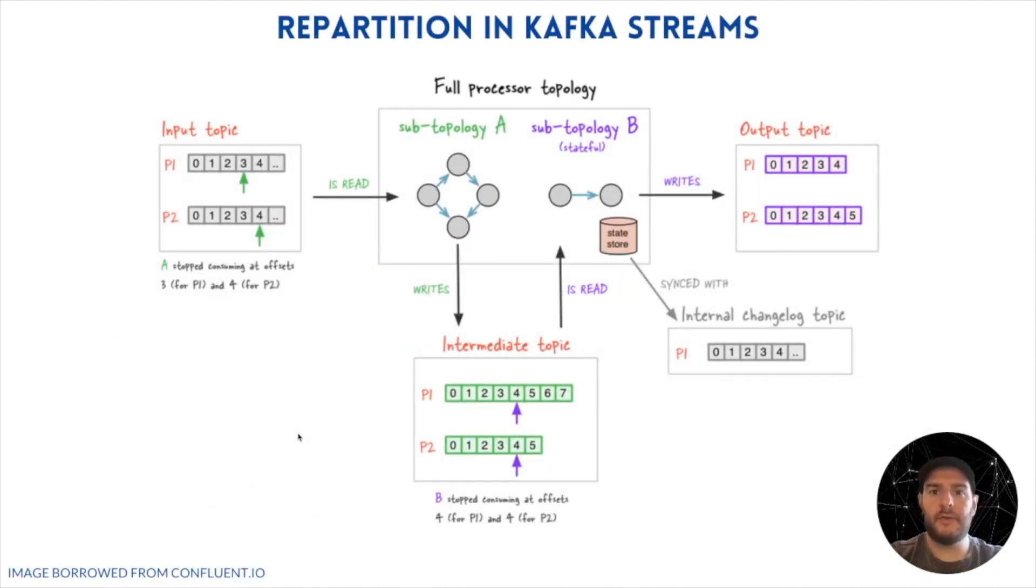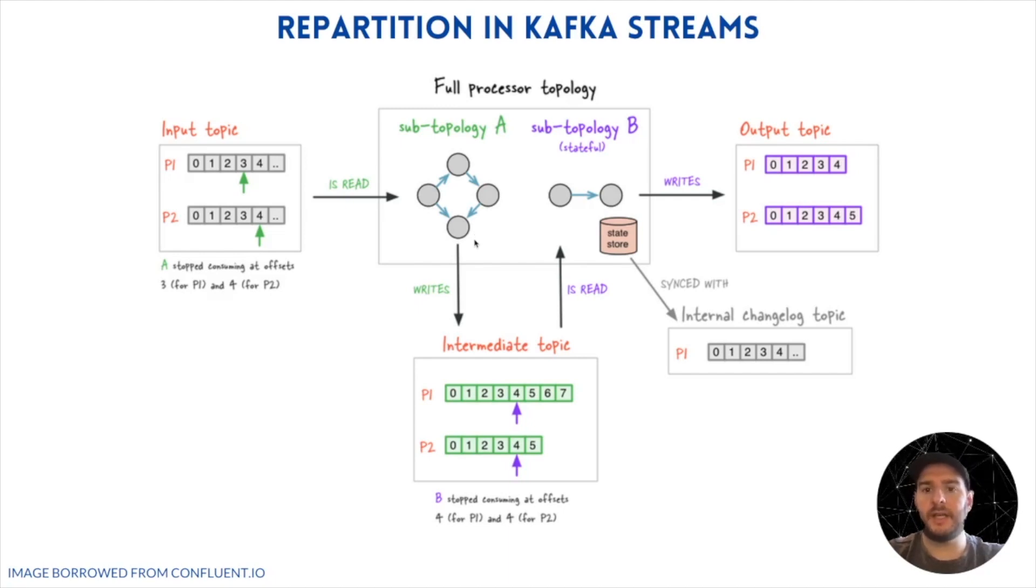This is how a repartition would look like in Kafka Streams. You have the main topology, and when you have a repartition triggered by a map operation, it creates an intermediate topic that then is read again by the topology and the process continues. As you can see, this is an input and output exhaustive operation, so it's better if we can avoid it.